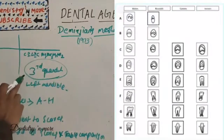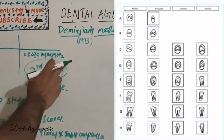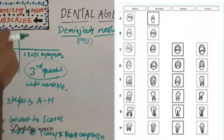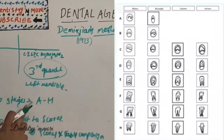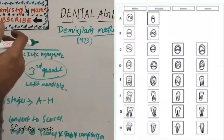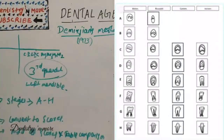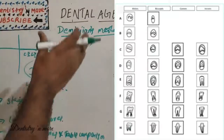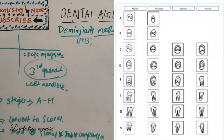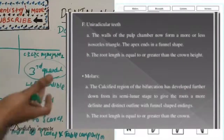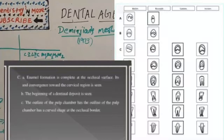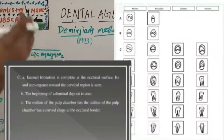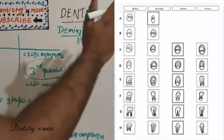We first select the seven teeth: starting from the second molar, then first molar, second premolar, first premolar, canine, lateral incisor, and central incisor. All seven teeth are rated on a scale A to H. The rating is assigned by following carefully the written criteria for each stage and by comparing the tooth with the diagram and X-ray pictures given for comparison. For each stage there are one, two, or three written criteria marked as A, B, and C.